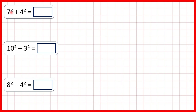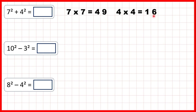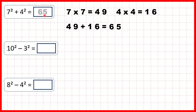So what is seven squared plus four squared? Well, seven squared means seven times seven which is forty-nine. And four squared means four times four which is sixteen. So we do the squaring first and then we can add our answers together. And forty-nine plus sixteen is sixty-five. So seven squared plus four squared is sixty-five.